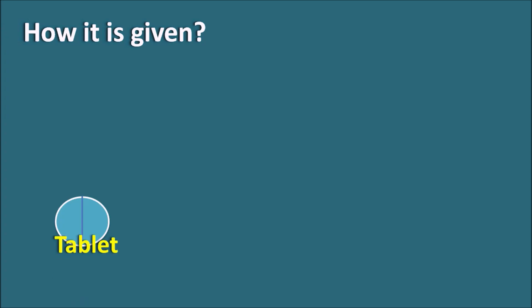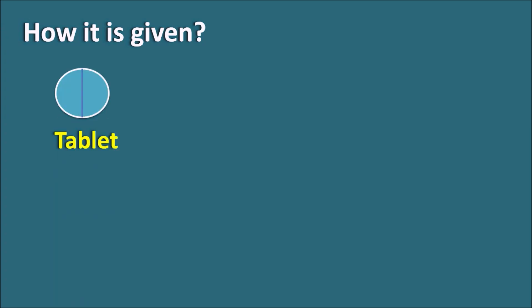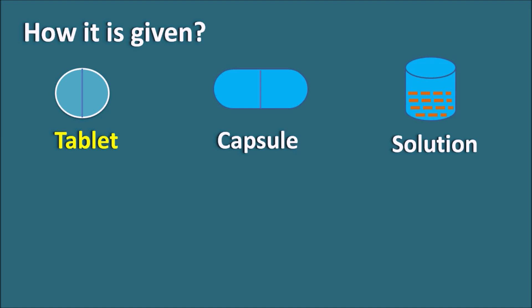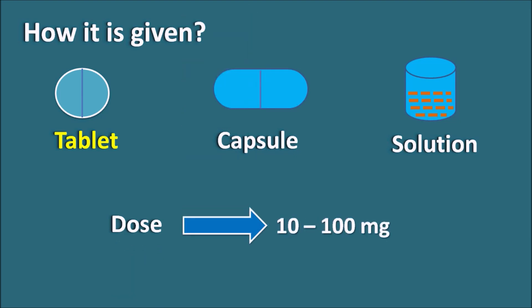Hydroxyzine is available in various formulations: tablets, capsules, injectable solution, and syrup. It is available at multiple doses ranging from 10 to 100 mg — commonly 50 to 100 mg, but also available at 10 mg and 25 mg. The dose is fixed according to clinical use, and because of its short duration of action, it can be given four times daily.